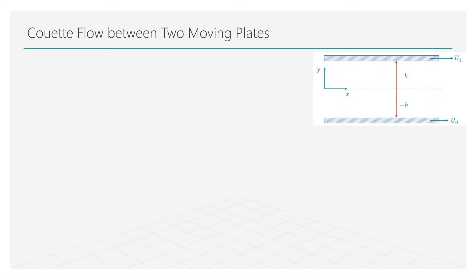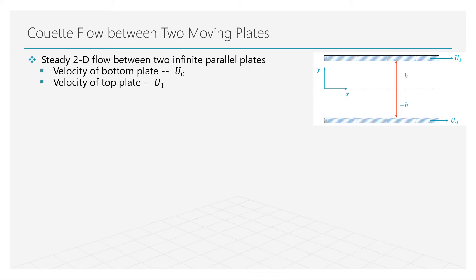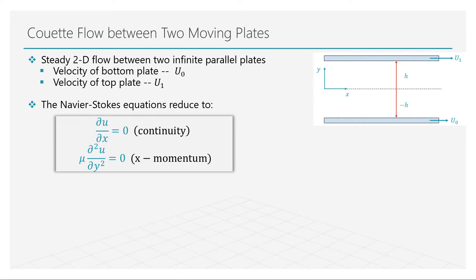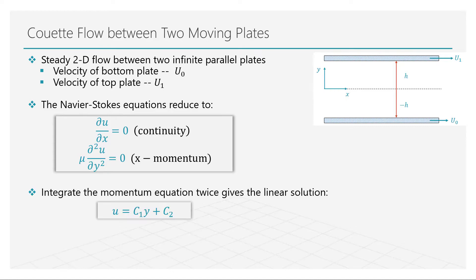Consider flow between two parallel plates separated by a certain distance. Let us assume that these two plates are moving parallel to each other in the same direction but at different velocities. If we also assume that there are no pressure gradients, we derive the following form of the continuity and momentum equations. The continuity equation indicates that there are no velocity gradients in the x or axial direction, meaning that the velocity is only a function of y. The momentum equation can now be integrated twice with respect to the y-coordinate to obtain a linear equation for the velocity.